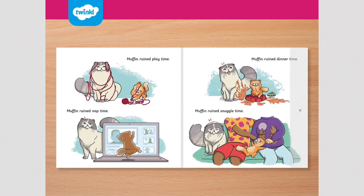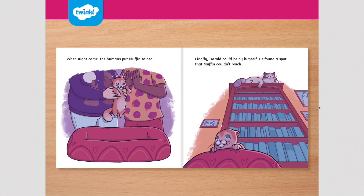Muffin ruined playtime. Muffin ruined nap time. Muffin ruined dinner time. And Muffin ruined snuggle time. When night came, the humans put Muffin to bed. Finally, Harold could be by himself. He found a spot that Muffin couldn't reach.